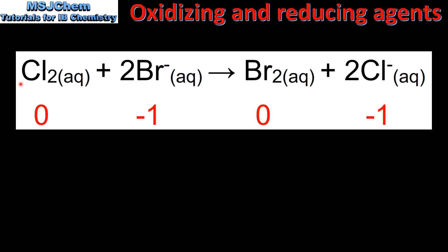Let's look at one more example. In this reaction we have chlorine reacting with bromide ions to form bromine and chloride ions. The oxidation state of the chlorine is 0 because it's an element, and the oxidation state of the bromide ion is -1. The oxidation state of the bromine is 0 because it's an element, and the oxidation state of the chloride ion is -1.